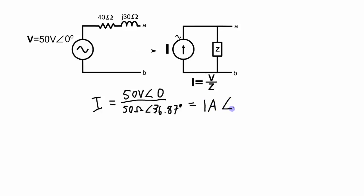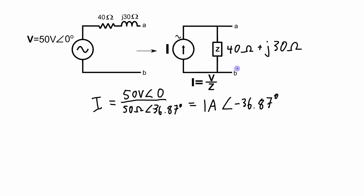Doing that division gives a current of 1 amp with a phase angle of negative 36.87 degrees. This converted circuit has the current source of 1 amp at −36.87 degrees in parallel with the same impedance — the 40-ohm resistor and 30-ohm inductor. When a load is connected between points A and B, that load doesn't care whether it's a 50-volt source in series or the equivalent current source in parallel.